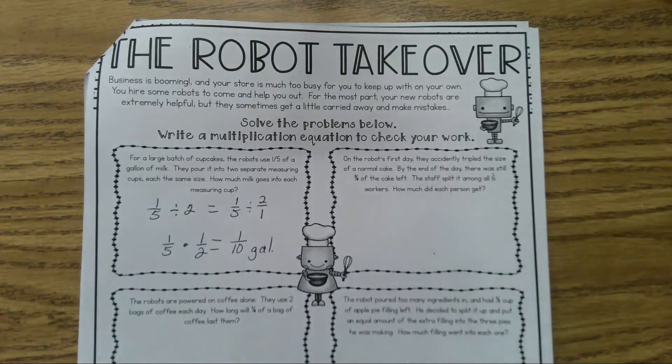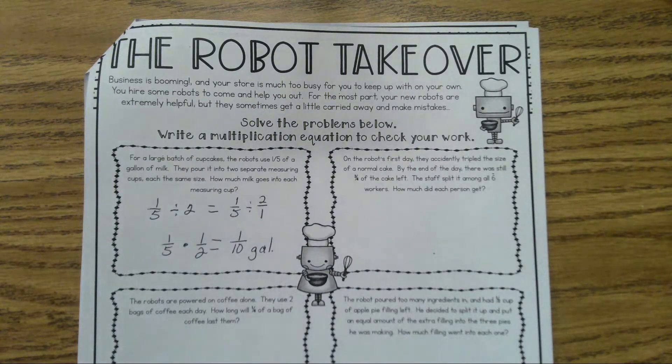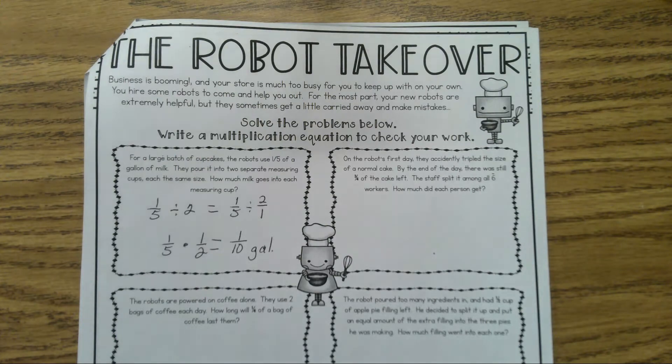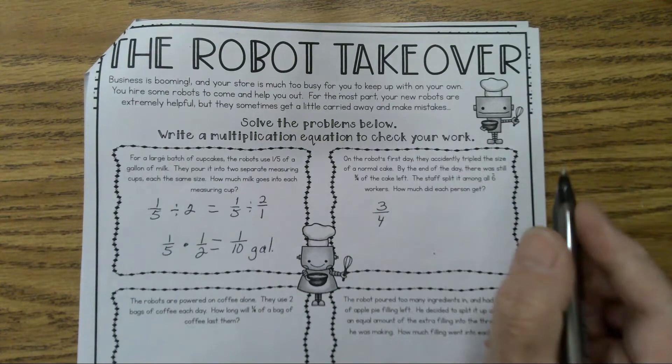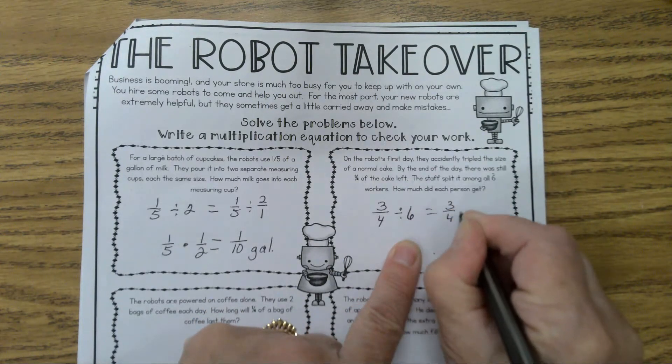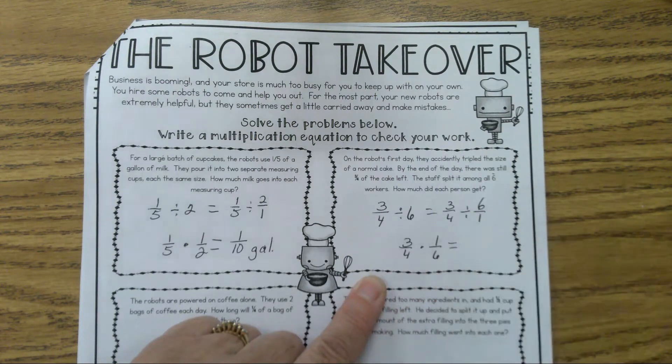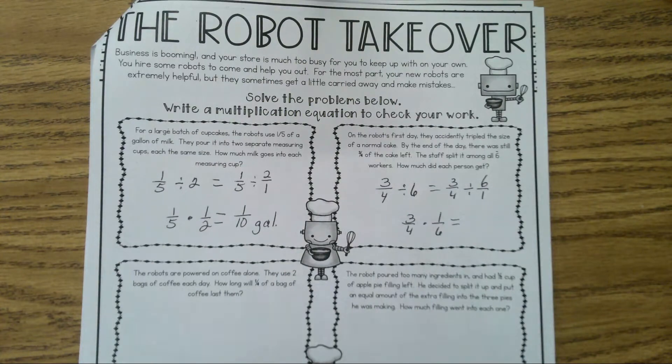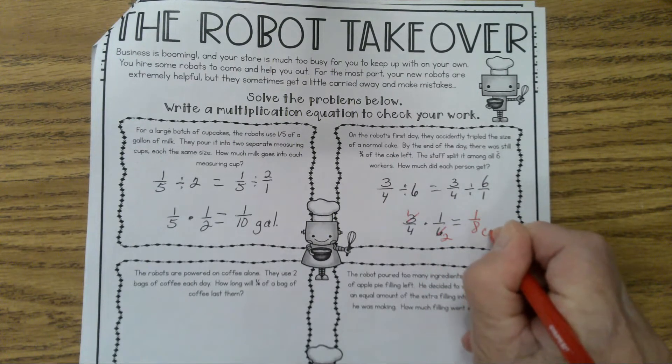Who would like to read the next one? Owen, go ahead. On the robot's first day, they actually tripled the size of the normal cake. By the end of the day, there was still 3/4 of the cake left. We found it among 6 burgers. How much did each person get? How much of the cake is left? 3/4. And we're going to split it, or in other words, when you split you divide. We're going to divide it by what? 6. I'm just going to rewrite that as 6 over 1. You're going to do keep, change, and flip. So you're going to end up with 3/4 times 1/6. Simplify before you multiply. Did you get 1/8 of a cup? Yes. Very good.